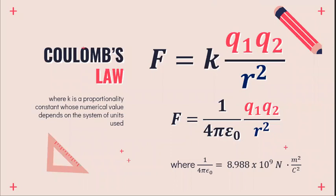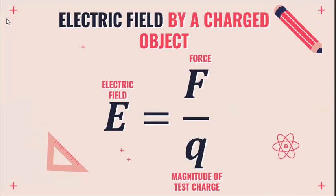K, which is our proportionality constant or Coulomb's constant, is equal to 1 over 4 pi epsilon naught, and equal to 8.988 times 10 raised to 9 newton meter squared per coulomb squared. The unit for electric force is in terms of newtons. The second equation is for finding electric field by a charged object.